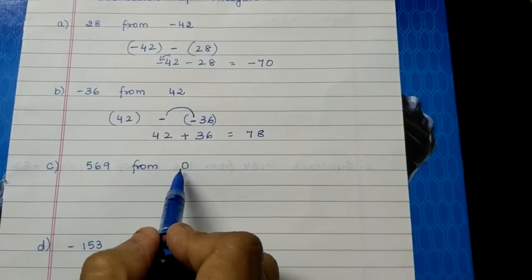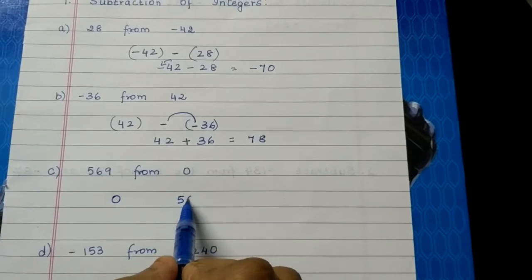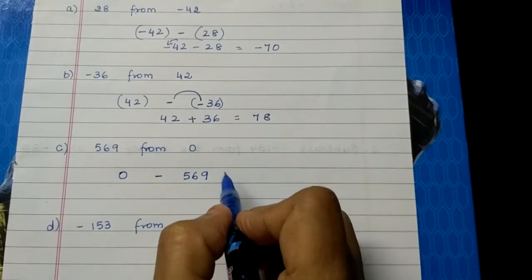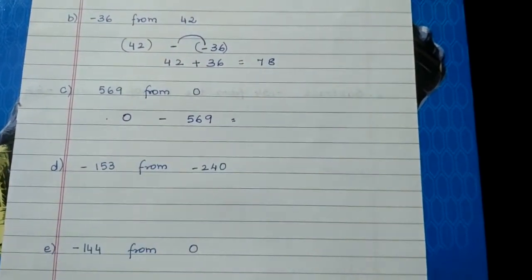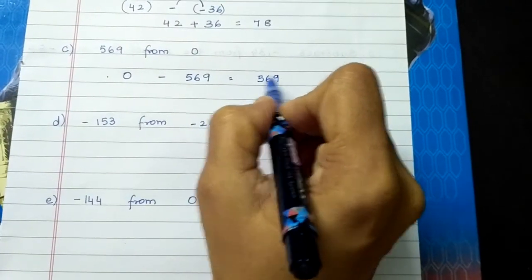Subtract 569 from 0. So 0 is the first number after from, and then here it is 569. Between these two numbers we have to put the minus sign. If there is 1 plus and 1 minus, what do we do? We subtract and put the sign of greater number.